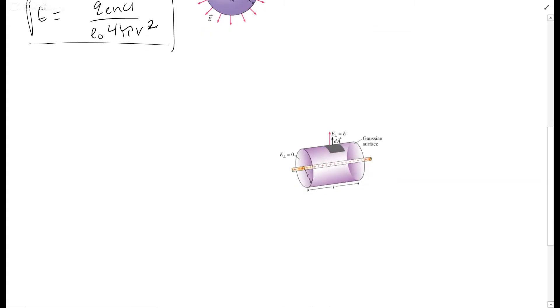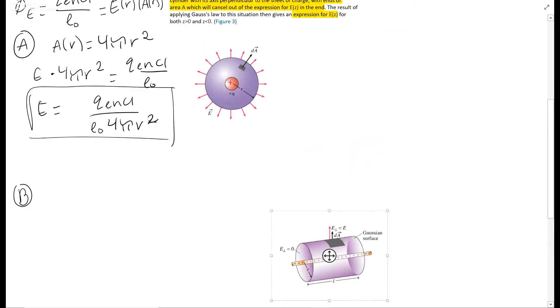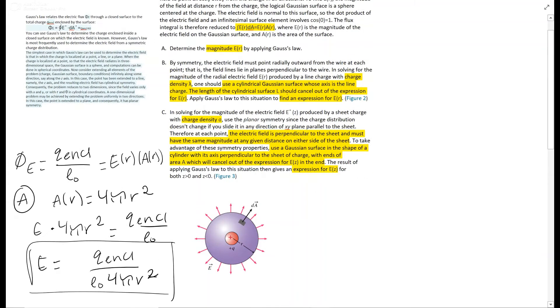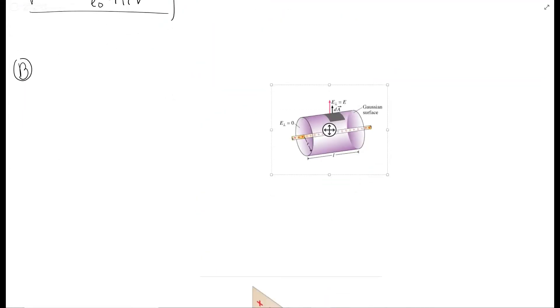Now let's go down to B. This is asking you, it is still explaining for E, but this is going to be an expression. And we're using a cylinder with a charge density of lambda. And it tells us some hints in the body if you want to read those.